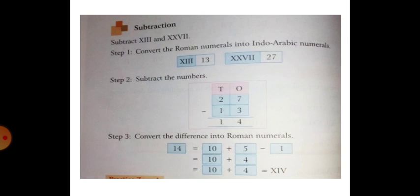For subtraction, in the same way, we first convert the Roman Numerals into Indo-Arabic numerals. Step two: subtract the numbers — the answer is 14. Step three: convert 14 into Roman Numerals by splitting as 10 plus 4, which is X plus IV, giving XIV. This is the concept of subtraction of Roman Numerals.